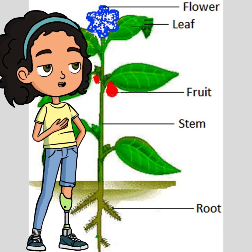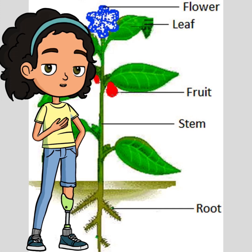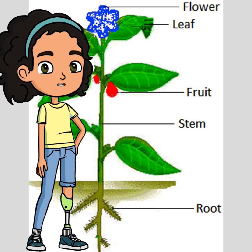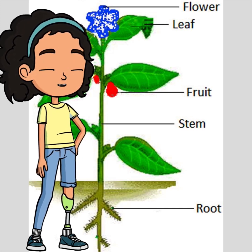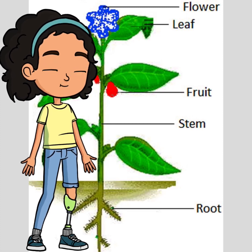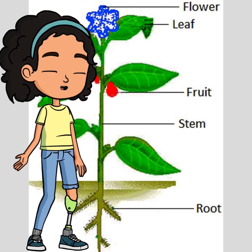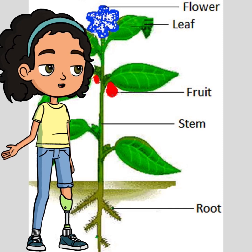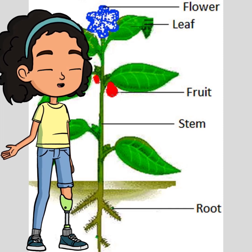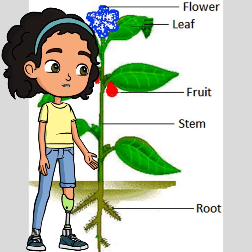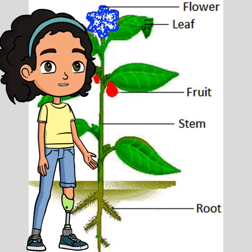Next is the stem. It supports the plant and transports water and nutrients between the roots and leaves, keeping everything connected and growing. Now we have leaves — they are essential for photosynthesis, turning sunlight into energy to feed the plant and help it thrive.